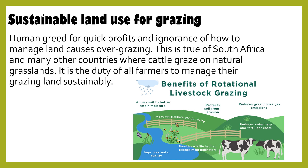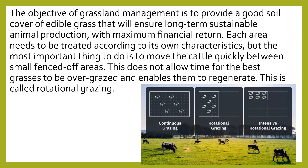Sustainable land use for grazing. Human greed for quick profits and ignorance of how to manage land causes over-grazing. This is true of South Africa and many other countries where cattle graze on natural grasslands. It is the duty of our farmers to manage their grazing land sustainably. The objective of grassland management is to provide a good soil cover of edible grass that will ensure long-term sustainable animal production with maximum financial return. The most important thing to do is to move the cattle quickly between small fenced-off areas, which does not allow time for the best grasses to be overgrazed and enables them to regenerate. This is called rotational grazing.